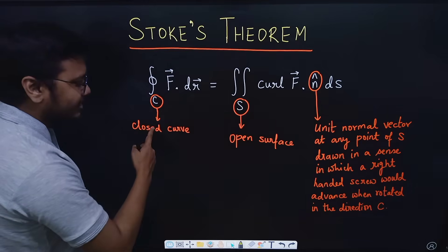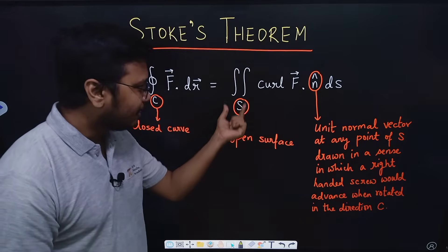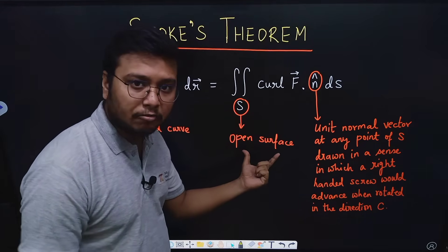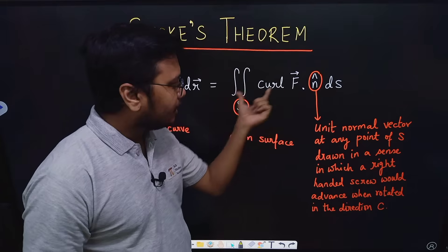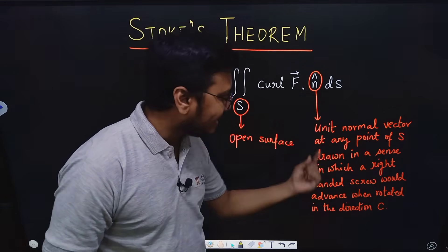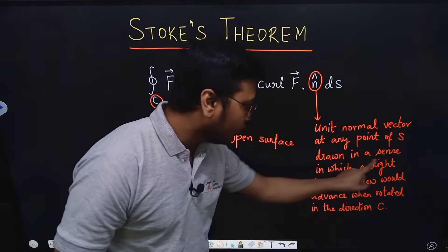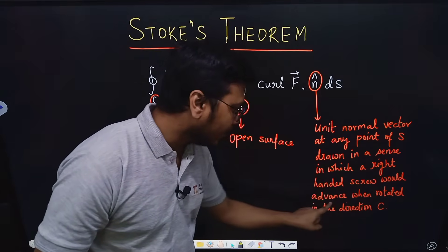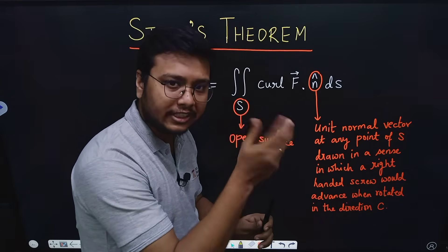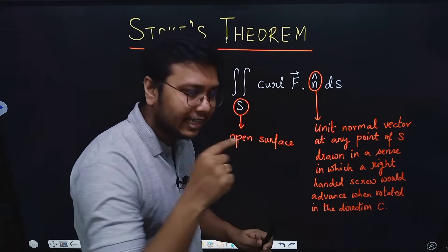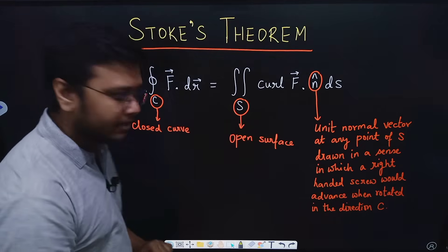The theorem states that the closed integral of F dot dr, taken over a closed curve C, equals the double integral taken over the open surface bounded by that curve. The double integral works on curl F dot n̂, where n̂ is the unit normal vector at any point on the surface, drawn in the direction a right-handed screw would advance when rotated in the direction of C.